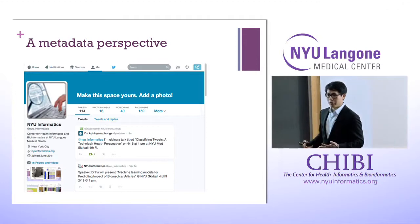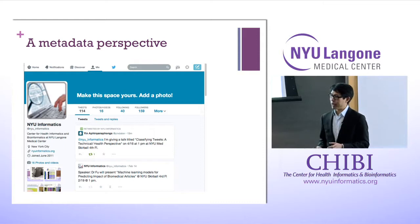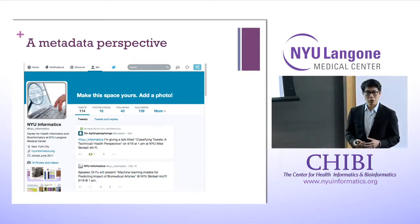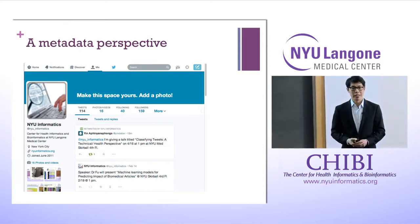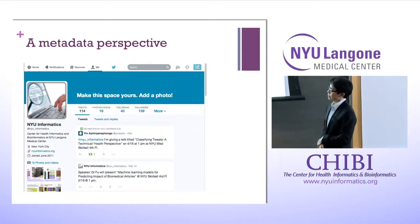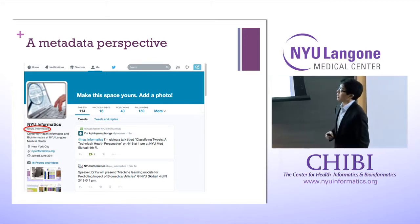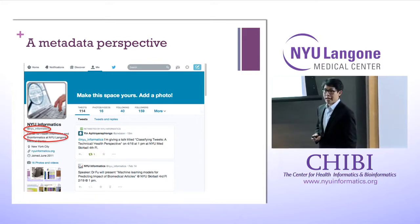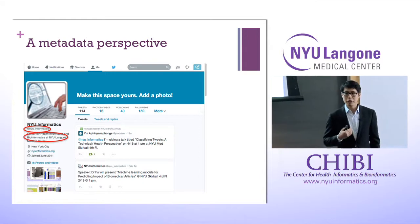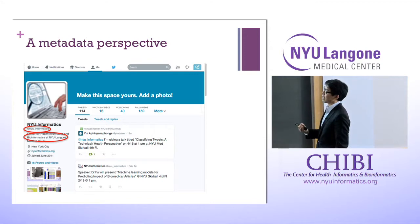Now that I've given you a primer on what Twitter is, I want to shift gears and think about Twitter in more of a data sense. What is the data available to us and how can we exploit it? The first thing is a unique name for every user on Twitter, coupled with a description tag that may tell us more about who's doing the tweeting.